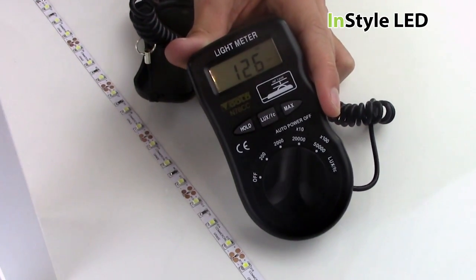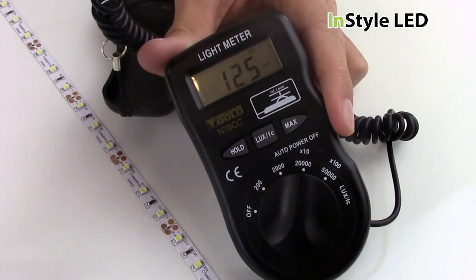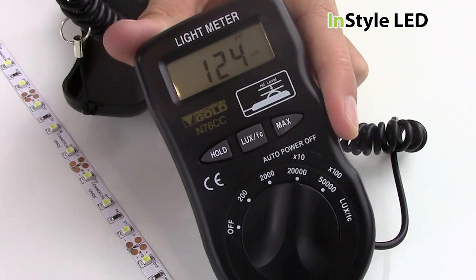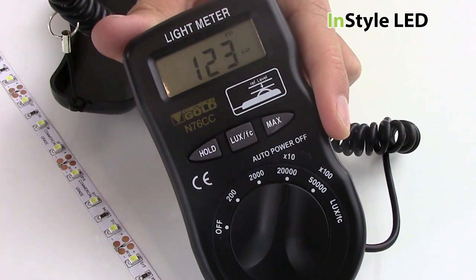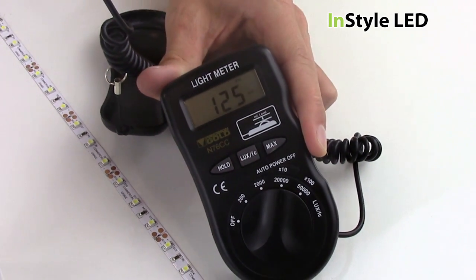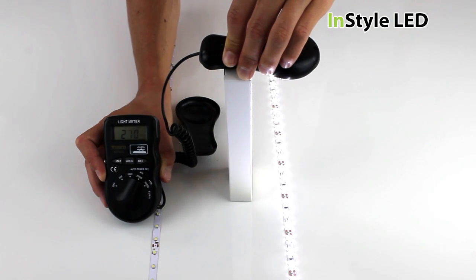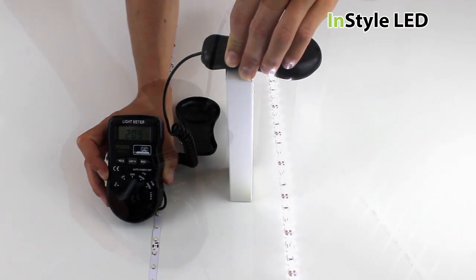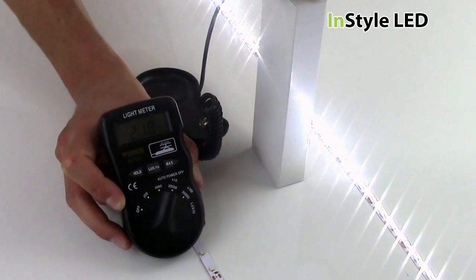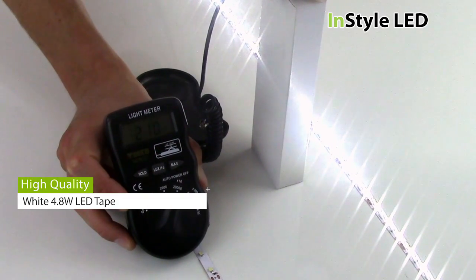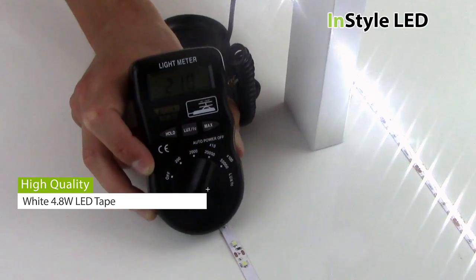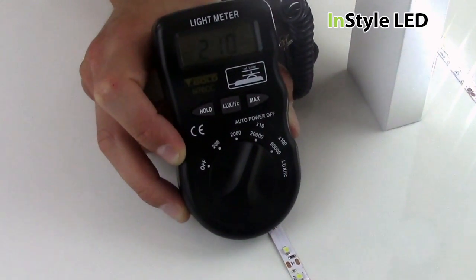As you can see, the low quality LED strip in this setup produces 125 lux. And as you can see, the high quality LED strip produces a maximum of 208 lux. This means the high quality LED strip is around two-thirds brighter than the low quality strip.